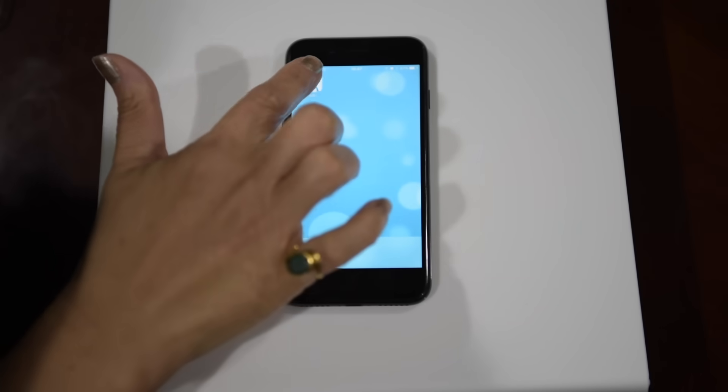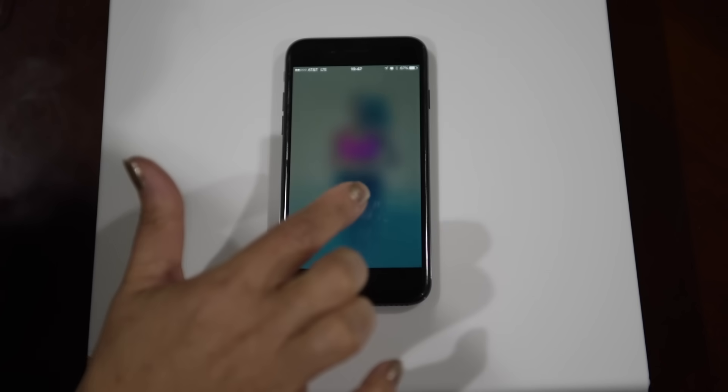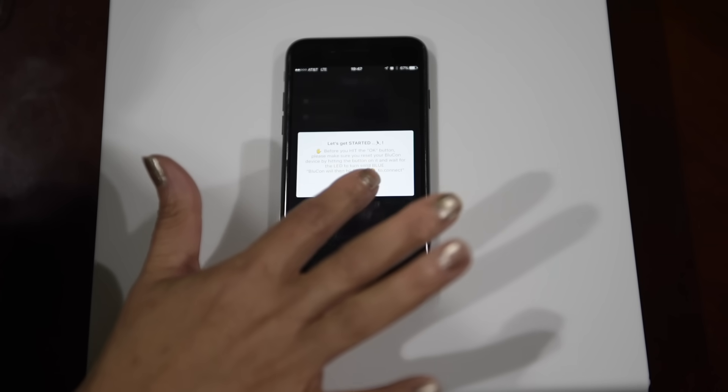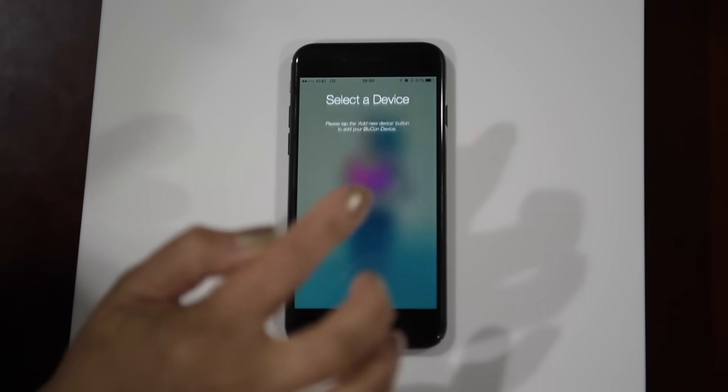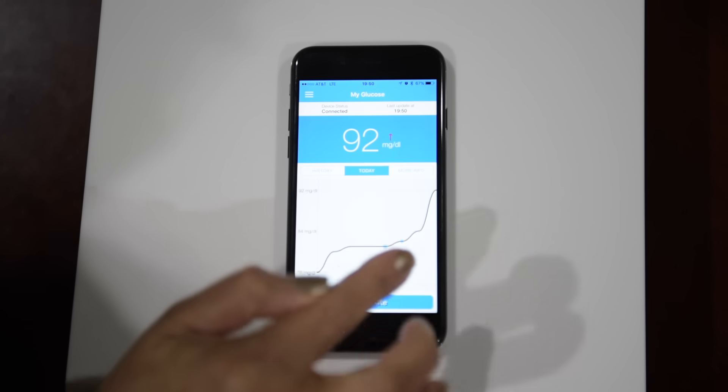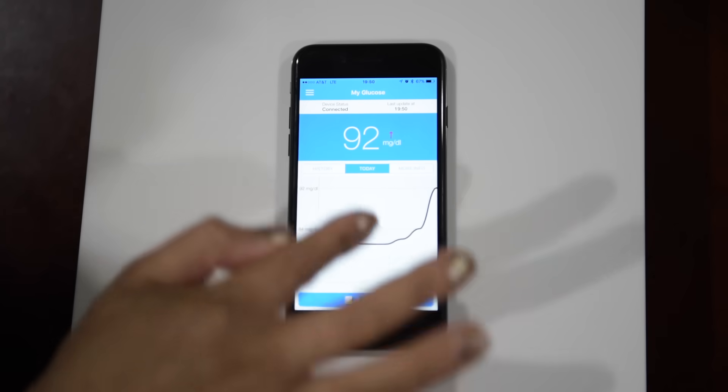Now launch the Bluecorn app by tapping on the app icon. If you want to share the reading with your doctor or caregivers you can register, otherwise you can just skip the registration part and it will start receiving the readings from the sensor.